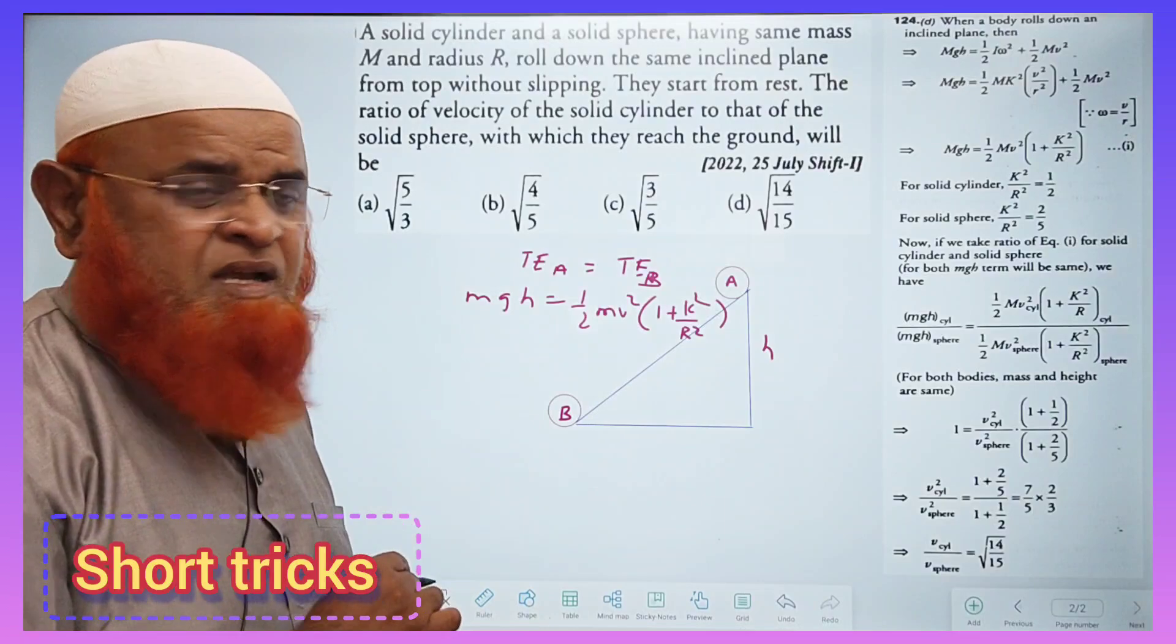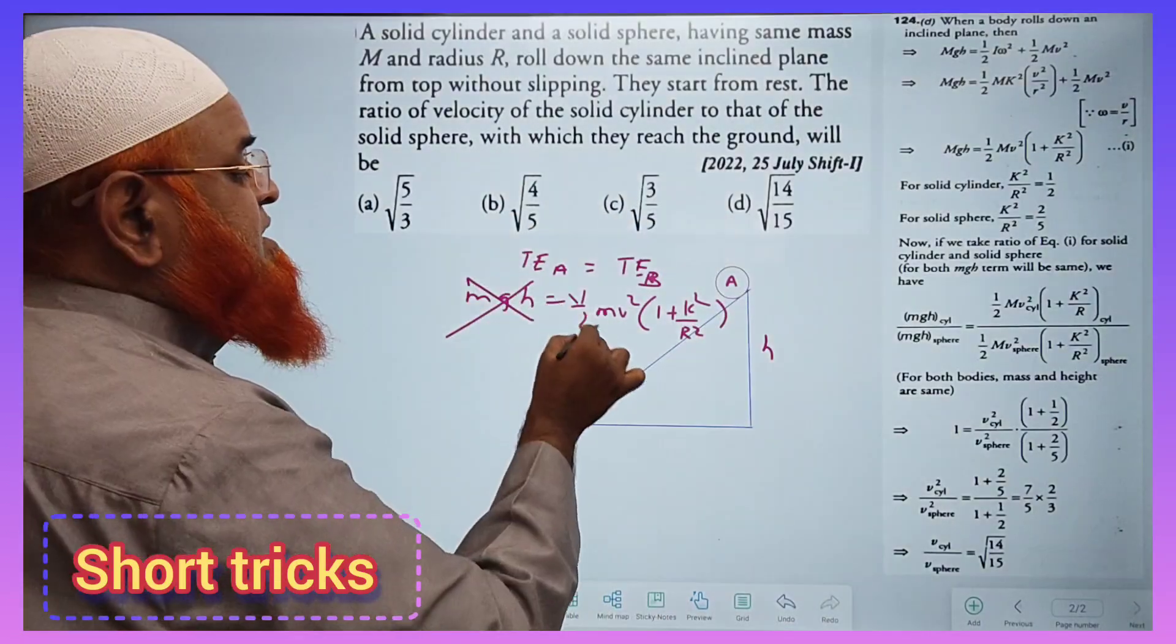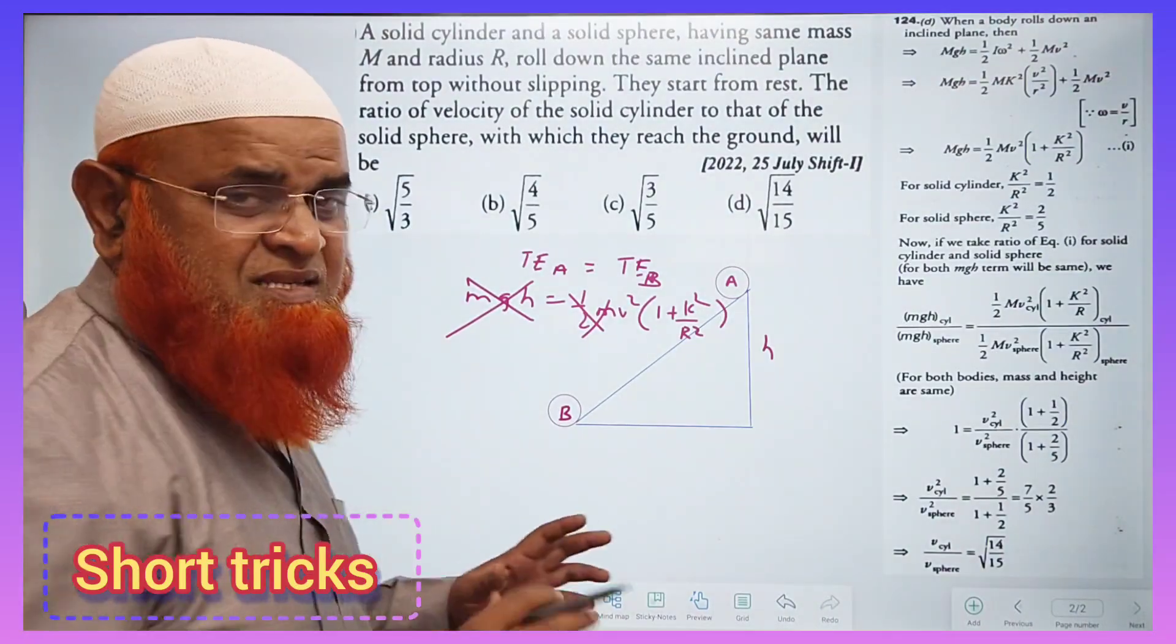What are the constants here? The height is also going to be same. So total part is getting cancelled here. Half is cancelled and mass is cancelled.